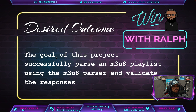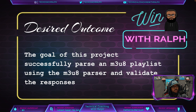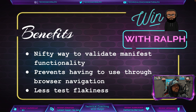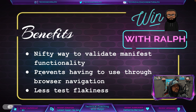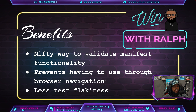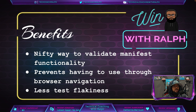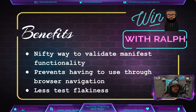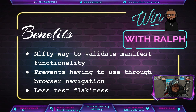What are our desired outcomes for this project? The goal is to successfully parse an m3u8 playlist using the m3u8 parser and to validate the responses we get. The benefits of using the m3u8 parser: it's a nifty way to validate manifest functionality. It prevents us from having to go through browser navigation for all of that validation, and it reduces the amount of test flakiness, allowing our tests to be more accurate and give us fewer false positives or false negatives.